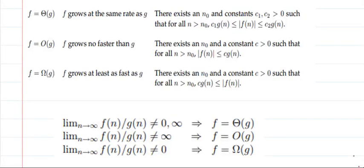In this video we will talk about an alternative definition of asymptotic notations. The first asymptotic notation is Theta notation: if f equals Theta of g, then the growth rate of f and g are similar. If f equals Big O of g, then f grows no faster than g — in other words, g is an asymptotic upper bound on f. If f equals Big Omega of g, then f grows at least as fast as g, meaning g is an asymptotic lower bound on f.